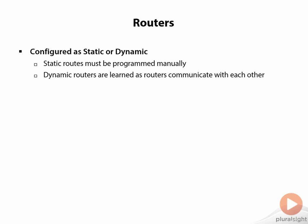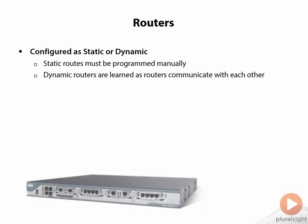Dynamic routers learn from each other. The routers will broadcast the routes that they know about and talk to each other — one says 'I know about A, B, C,' another says 'I know about D, E, and F.' As they communicate, pretty soon all routers know about everybody else, or at least they know where to send traffic next.